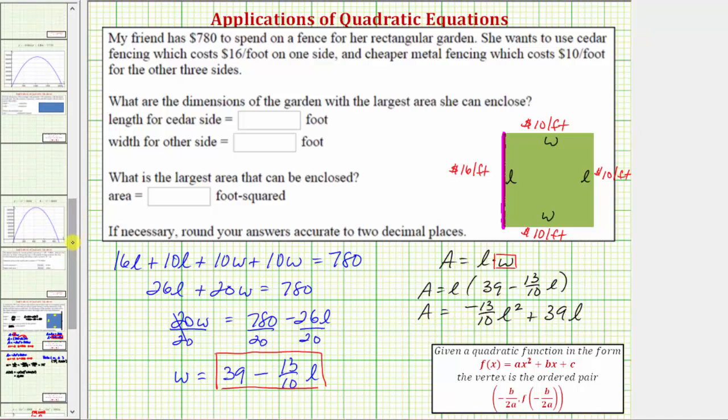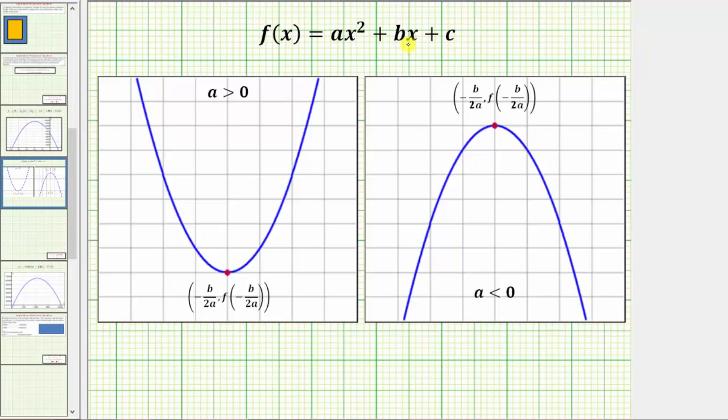For a quick review, if we have a quadratic function in this form, f(x) equals ax² plus bx plus c, if a is positive the parabola opens up, if a is negative the parabola opens down. Either way, we can find the vertex using the formula where the x coordinate equals -b/(2a), and the corresponding y value is f(-b/(2a)).